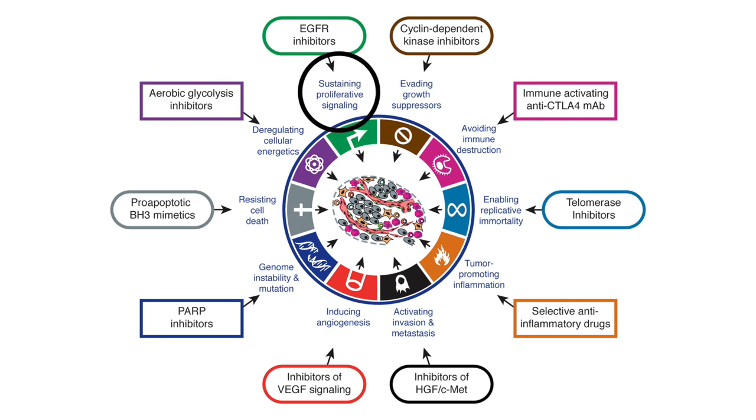Hallmark number one is sustaining proliferative signaling. Normally, growth factors tell a cell when it should divide. But in cancer, tumor cells lose that reliance on growth factors — they can divide without being told to. They might overexpress growth factors or synthesize their own, setting up a positive feedback loop so they don't rely on external growth factors provided by other cells.